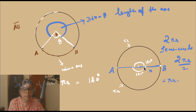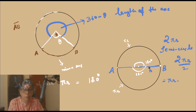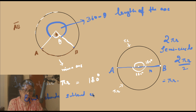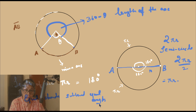Can we say that equal arcs subtend equal angles? This is for you all to ponder upon. We have already seen that equal chords of a circle subtend equal angles. The question is whether equal arcs subtend equal angles at the centre.